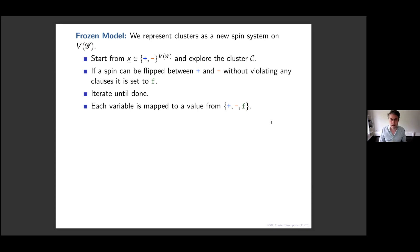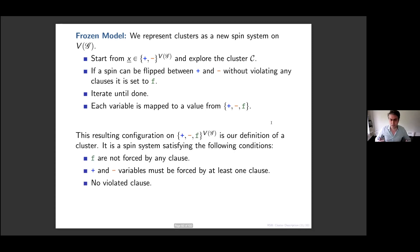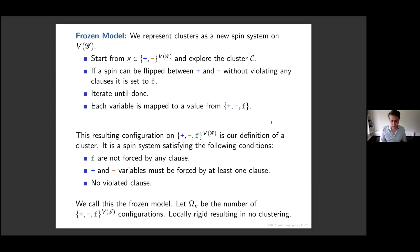It turns out that any solution in a given cluster gets mapped to the same assignment of plus, minus, or free — so we map a whole cluster of solutions down to a single point. This frozen model assignment is itself a constraint satisfaction problem satisfying more complicated rules: free variables must not be forced by any clause; plus or minus variables must be forced by at least one clause; and any clause containing only pluses and minuses must be satisfied. This new CSP is more complicated but has a very nice property: it doesn't have clustering. We've taken the clusters and mapped them to single points, so the space is replica symmetric for the entire range of alpha up to the satisfiability threshold.